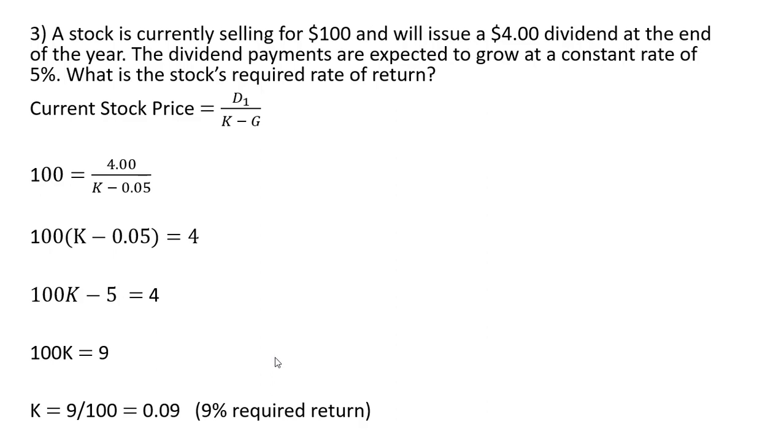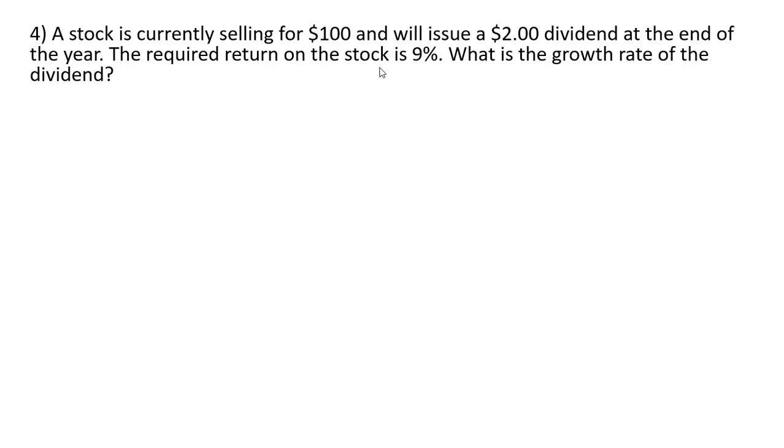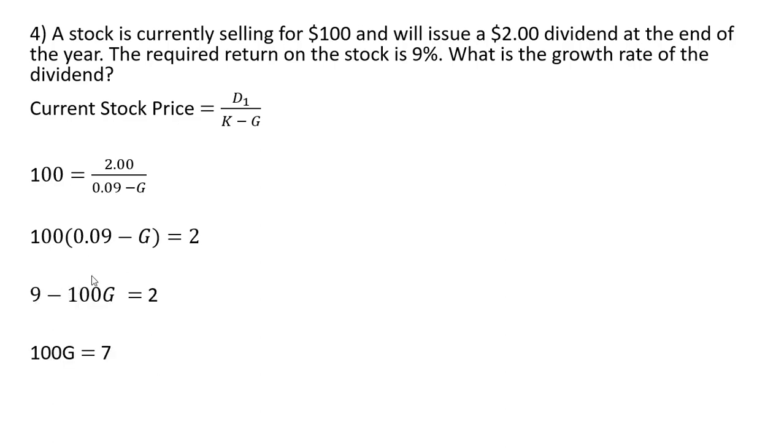And in our last example, a stock is currently selling for $100 and will issue a $2 dividend at the end of the year. The required return on the stock is 9%. What is the growth rate of the dividend? So the price is $100, the dividend is $2, the required return is 9%, or 0.09. And we're trying to solve for G, the unknown. So once again, we're just going to multiply through by what's in the denominator here. So on the left-hand side, we have the following. 100 times 0.09 is 9, 100 times G is going to be 100G. You've got the minus in front, though. And then moving some things around, we're going to get 100G equals 7, and the growth rate in the dividend is expected to be 7% per year.